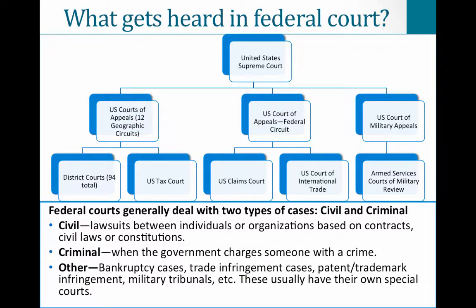So what gets heard in federal court? Here is a broad overview of the federal court system. The district courts are typically where you would start. If you had an appeal, you would go up to the appeals courts. There are 94 district courts and 12 appeals courts.